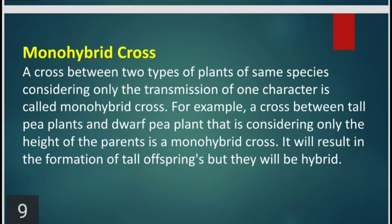Monohybrid Cross: A cross between two types of plants of the same species, considering only the transmission of one character, is called a Monohybrid Cross. For example, a cross between tall pea plants and dwarf pea plants — considering only the height of the parents — is a Monohybrid Cross. It will result in the formation of tall offspring, but they will be hybrid.